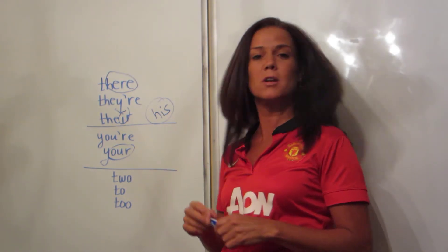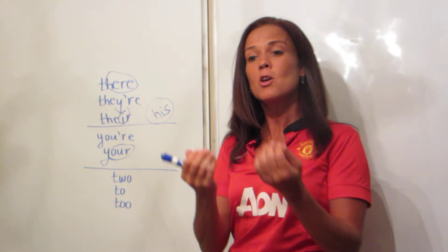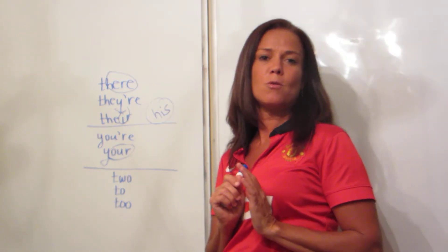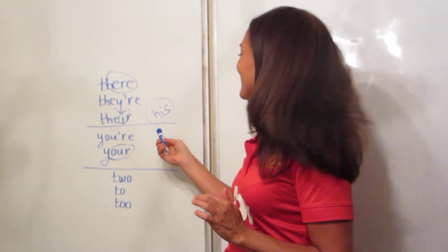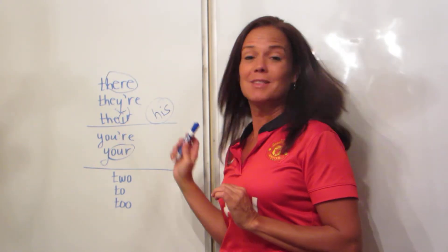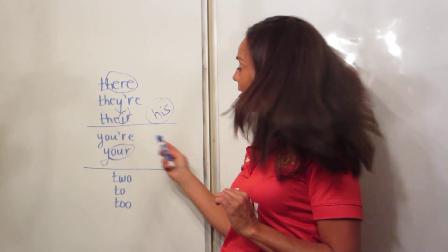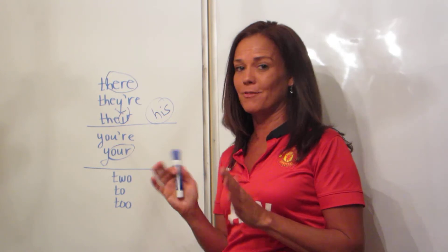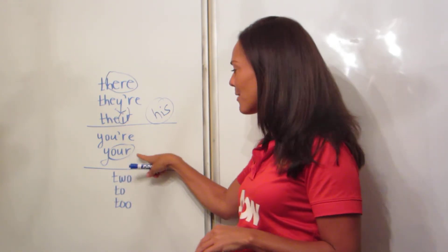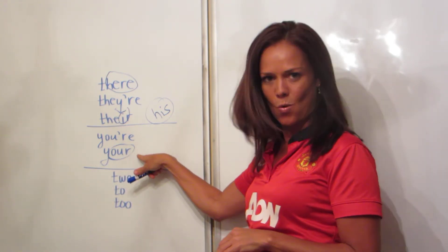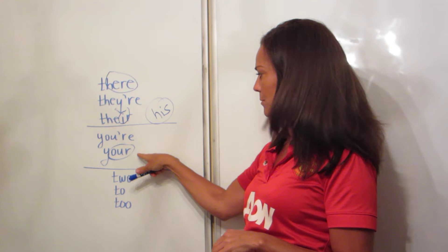If you're sending a text to someone and you're telling them 'you're beautiful' or 'you're my best friend,' either put the apostrophe-R-E there or just flat out say 'you are.' Do not write 'your beautiful.'